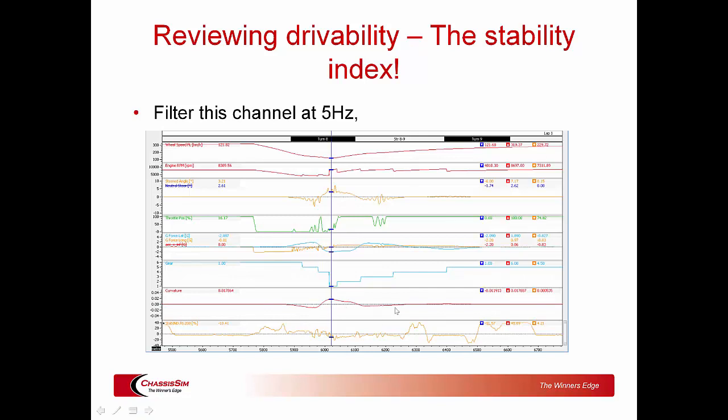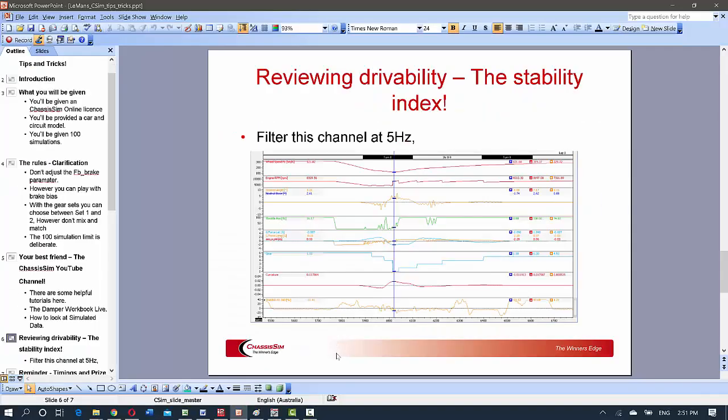Pay attention to what the Stability Index is doing from mid-corner to corner exit — it probably overstates things a little at turn entry, but it's still good for drivability. Also remember: I've given you a bit of a raw model here. Have a play with your dampers to see if you can smooth that out. This is not just about raw speed — when this gets evaluated, there's going to be a driver driving ChassisSim drive-in-the-loop to see whether they can hang on to what you've set up.